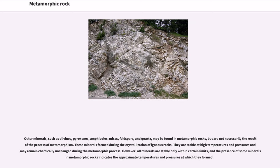Other minerals, such as olivines, pyroxenes, amphiboles, micas, feldspars, and quartz, may be found in metamorphic rocks, but are not necessarily the result of the process of metamorphism. These minerals form during the crystallization of igneous rocks. They are stable at high temperatures and pressures and may remain chemically unchanged during the metamorphic process. However, all minerals are stable only within certain limits, and the presence of some minerals in metamorphic rocks indicates the approximate temperatures and pressures at which they form.